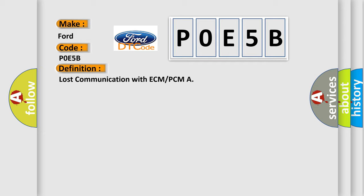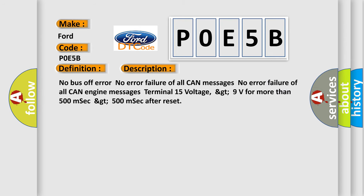And now this is a short description of this DTC code: No bus off error, no error failure of all CAN messages, no error failure of all CAN engine messages, Terminal 15 voltage greater than 9 volts for more than 500 milliseconds, greater than 500 milliseconds after reset.